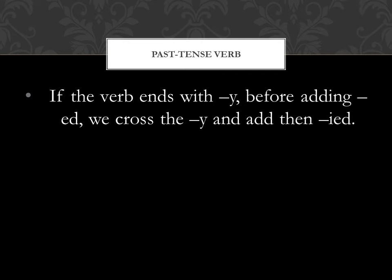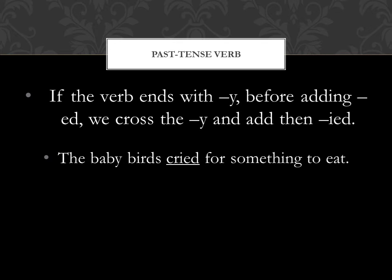If the verb ends with -y, before adding -ed, what do we do? We cross out the y and then we add -ied. For example, 'The baby bird cried for something to eat.' The verb here is cry, but cry ends with a y, so we cross the y and put i-e-d.